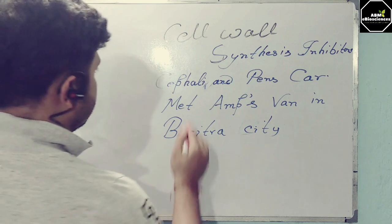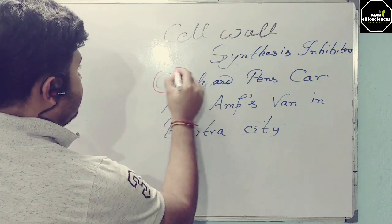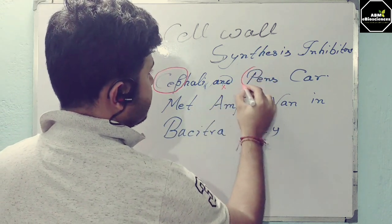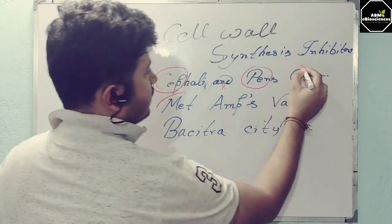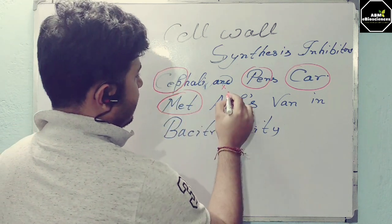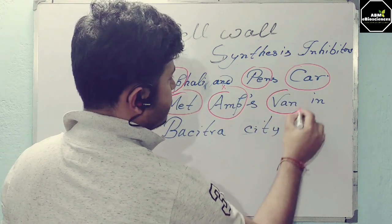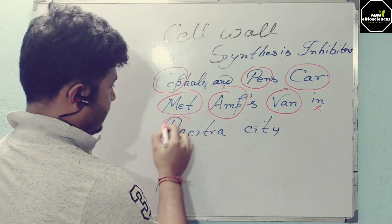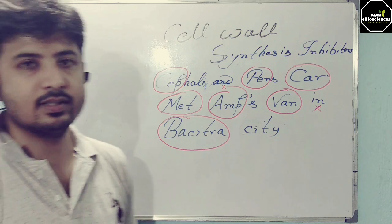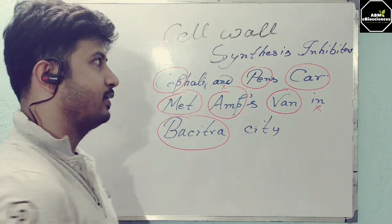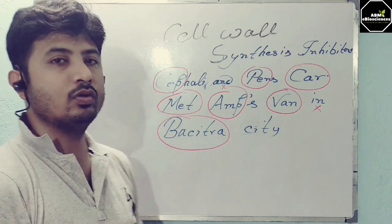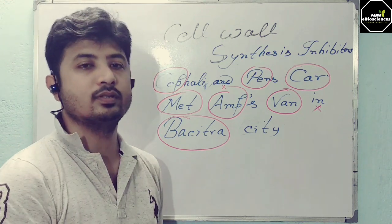The key words from the sentence stand for: CEP stands for Cephalosporins, Pins for Penicillin, then Carbapenicillin, Methicillin, Ampicillin, Vancomycin, then Streptomycin — represented by the N — and finally Bacitracin, represented by 'Basitra city.' So only one sentence gives you all the names of the cell wall synthesis inhibitors and helps you avoid confusing them with protein synthesis inhibitors.